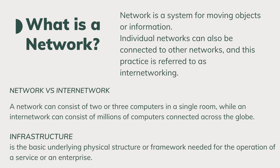First, what is a network? Basically, there are networks all around us. This could be in the form of transportation, cellular networks, data networks, cable television networks, and telephone networks. In its simplest form, a network is a system for moving objects or information. Individual networks can also be connected to other networks, and this practice is referred to as internetworking. A network can consist of two or three computers in a single room, while an internetwork can consist of millions of computers connected across the globe. Infrastructure is the basic underlying physical structure or framework needed for the operation of a service or an enterprise.